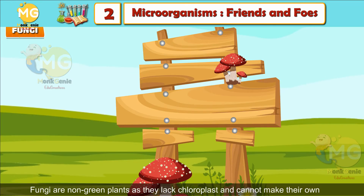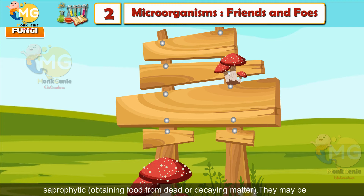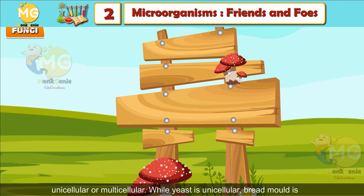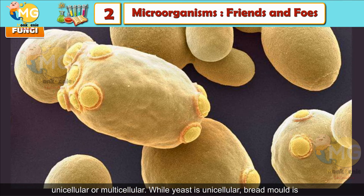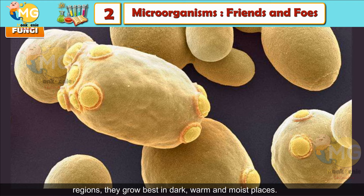Fungi are non-green plants as they lack chloroplast and cannot make their own food. They are either parasitic, obtaining food from other organisms, or saprophytic — that is, obtaining food from dead or decaying matter. They may be unicellular or multicellular. While yeast is unicellular, bread mold is multicellular. Though fungi are found everywhere, from deserts to very cold regions, they grow best in dark, warm and moist places.